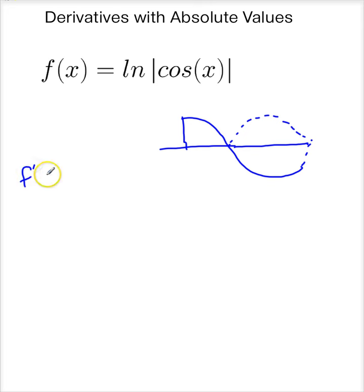So f prime of x is equal to 1 over the cosine of x times the derivative of cosine. And the derivative of cosine is minus sine of x. I can rewrite this as minus tangent of x.